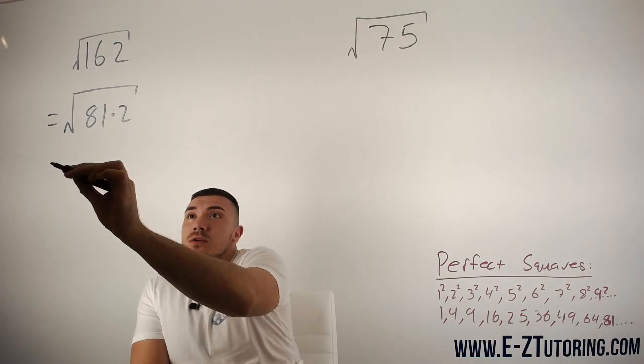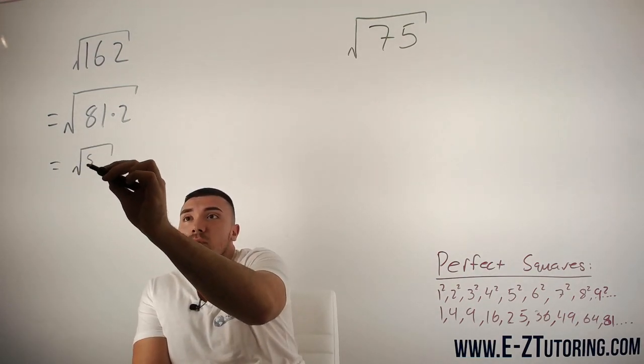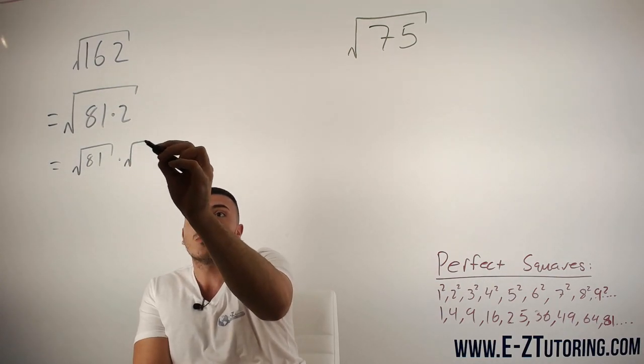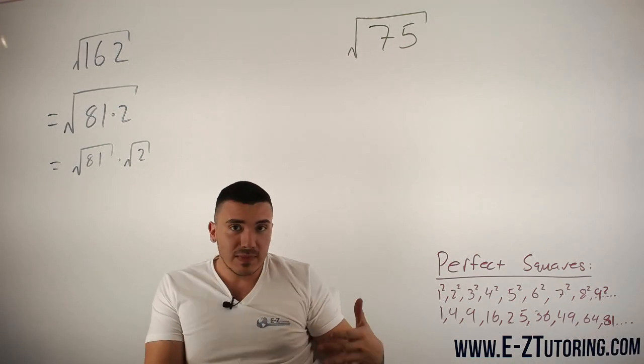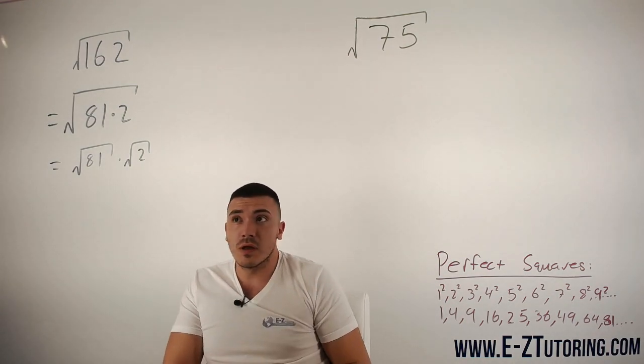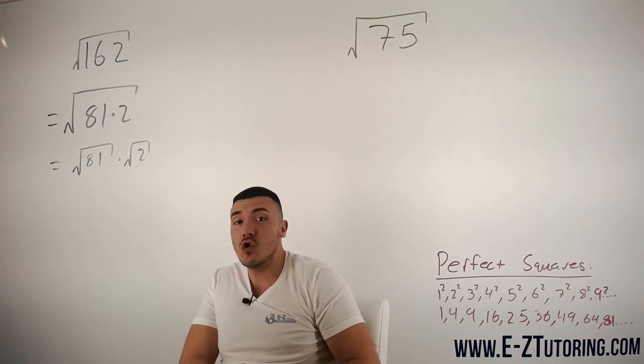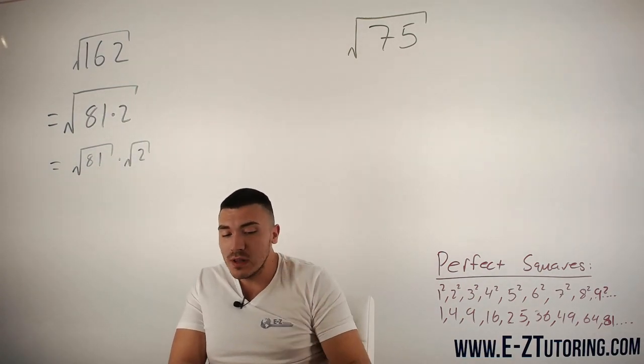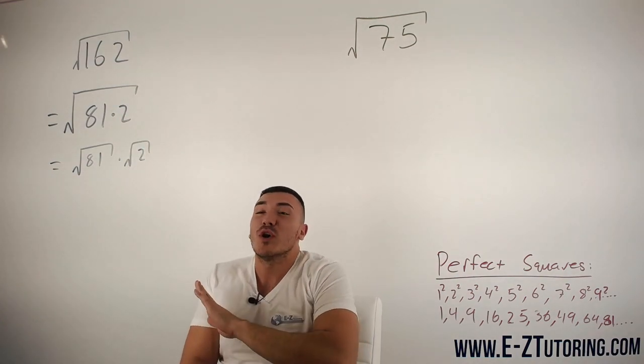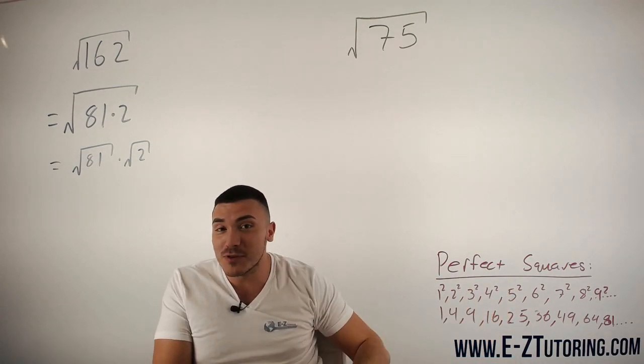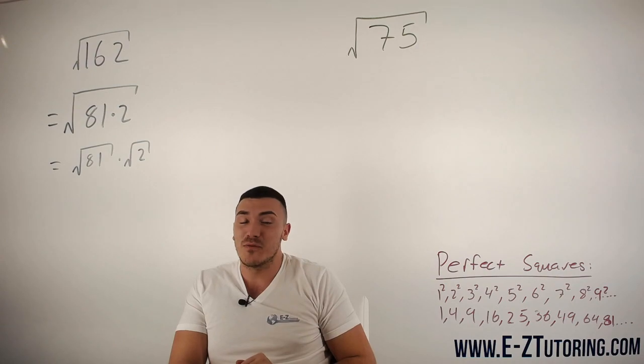Okay, now what I'm going to do is I'm going to split these up. I'm going to split this into the square root of 81 times the square root of two. Now, this step is where some people might get a little confused. You are allowed to split a square root into two if and only if the inside is either multiplication or division. You are not allowed to do it for addition or subtraction. And I see students do that all the time. You are not allowed to do it for addition or subtraction.